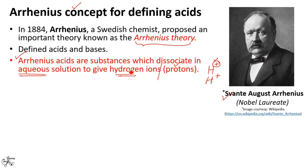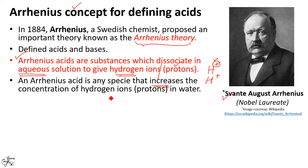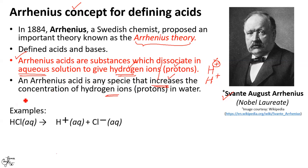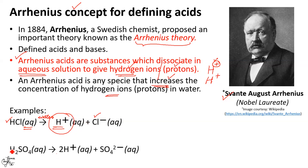We can also say that an Arrhenius acid increases the concentration of hydrogen ions H⁺. For example, HCl in the presence of water — written as 'aq' or with water on the arrow — dissociates to give a proton H⁺ and the anion chloride Cl⁻; since it gives a proton, it is an Arrhenius acid. Similarly, sulfuric acid H₂SO₄ dissociates in water to give two protons (because it has two hydrogen atoms) and the sulfate anion SO₄²⁻.